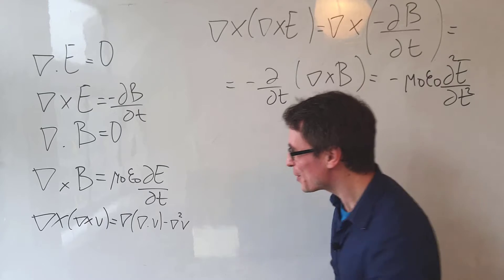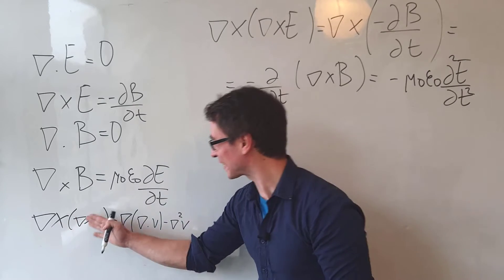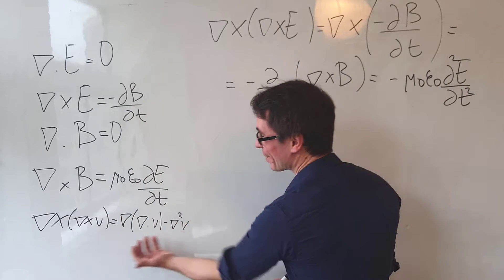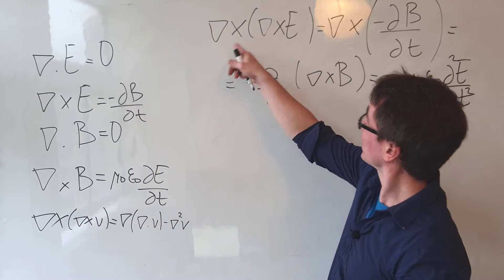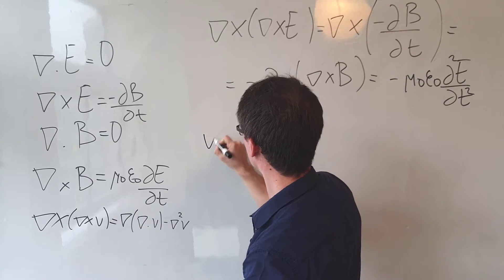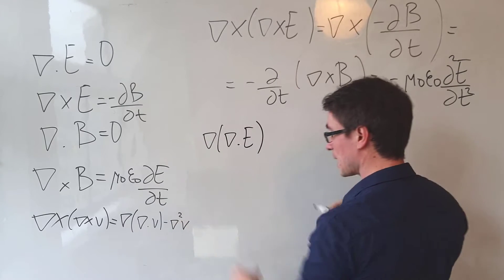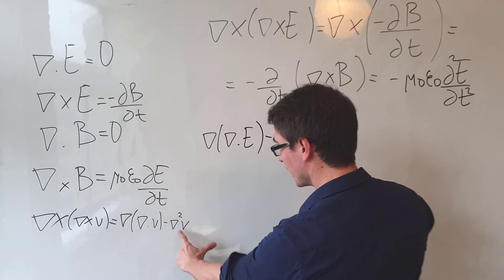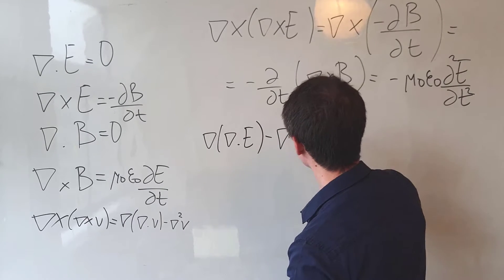And now what I'm going to do is use this identity from maths that says the curl of the curl of a vector is equal to this expression. Applying this to the left hand side, we get that the curl of the curl of the electric field is going to equal the gradient of the divergence of E. I'm going to take away this bit here that is known as the Laplacian. You can think of it as a second spatial derivative.